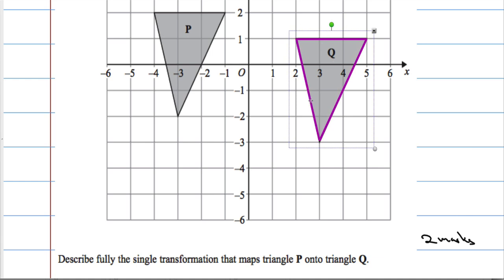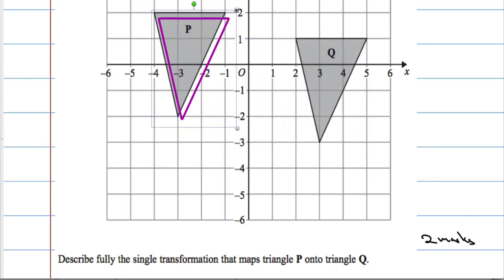Well, it certainly hasn't been a rotation because the shape hasn't been turned. It hasn't been a reflection because the shape hasn't been flipped, and it's not bigger and it's not smaller so it can't be an enlargement. Therefore it must be the other type of transformation.